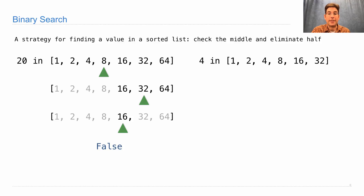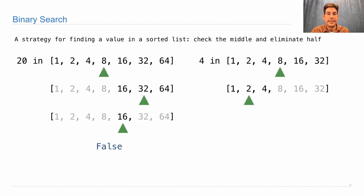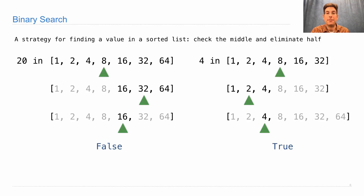When you check for an element that is there, you carry out the same process. Check first at the middle element. 8 is not 4, so I know if 4 is in the list, it has to be somewhere to the left. I now have 1, 2, and 4 remaining. I check to see if 4 is 2. Instead 4 is greater, so I eliminate everything to the left of 2. I'm left with only one element to check, which happens to be 4.